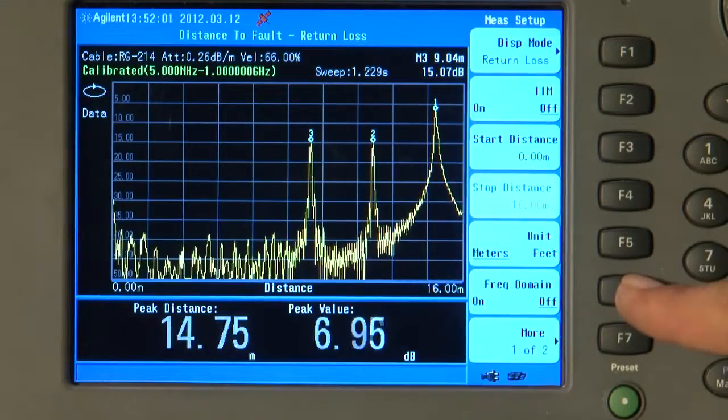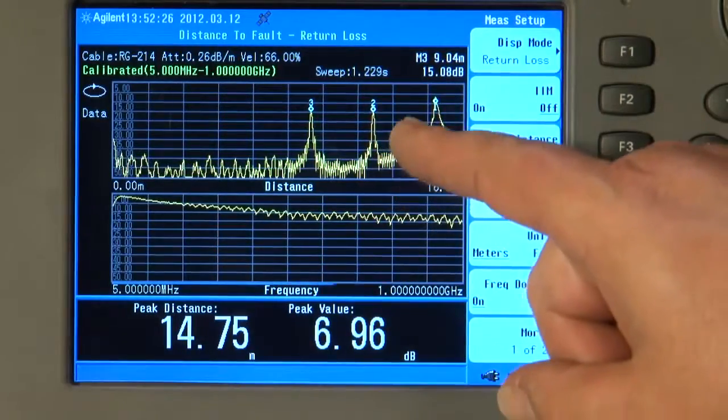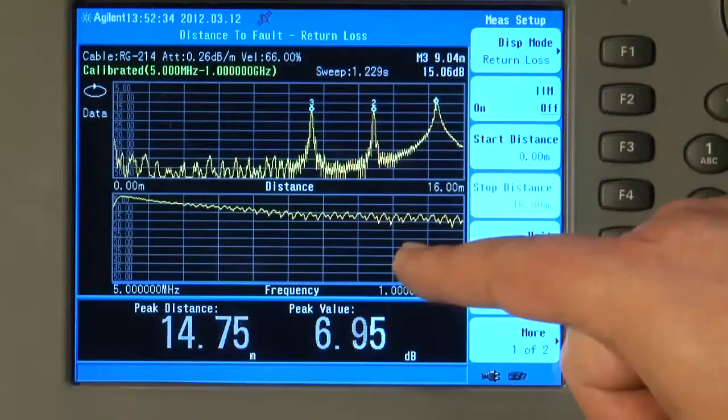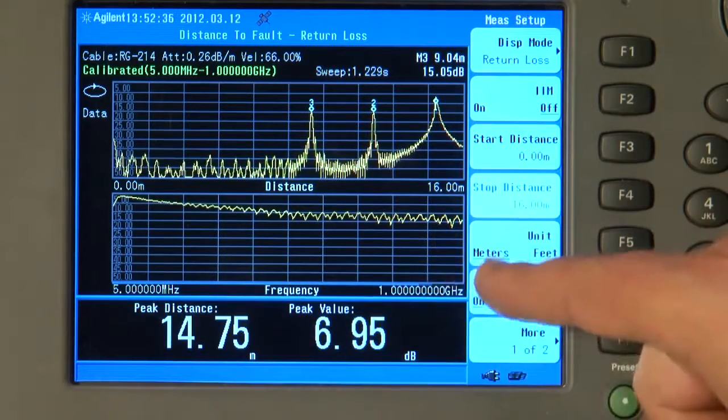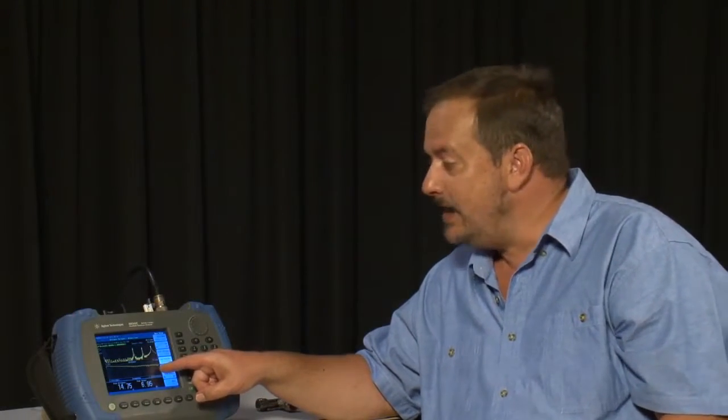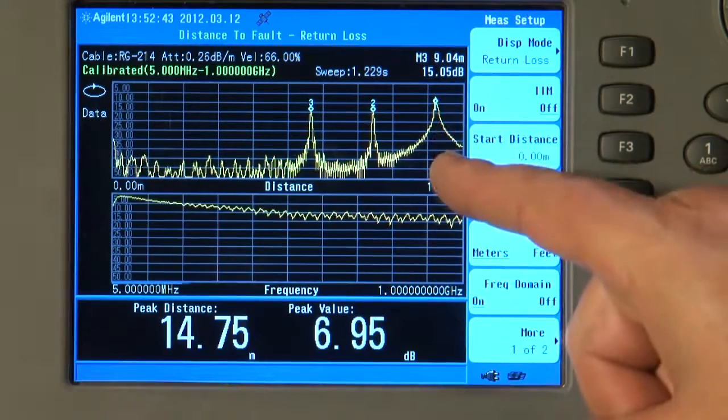And there is one more really nice feature of the distance to fault measurement on the HSA. You will see here there is a button called Frequency Domain. If I turn that on, now the screen is split into two displays. The top half is still showing us return loss versus distance, the same distance to fault measurement we were making just now. But now the lower half of the screen is showing us return loss versus frequency. So we can make a normal return loss measurement at the same time as making a distance to fault measurement.